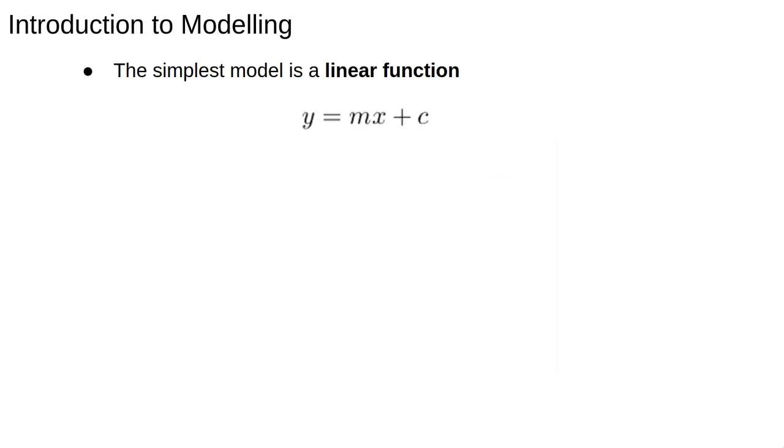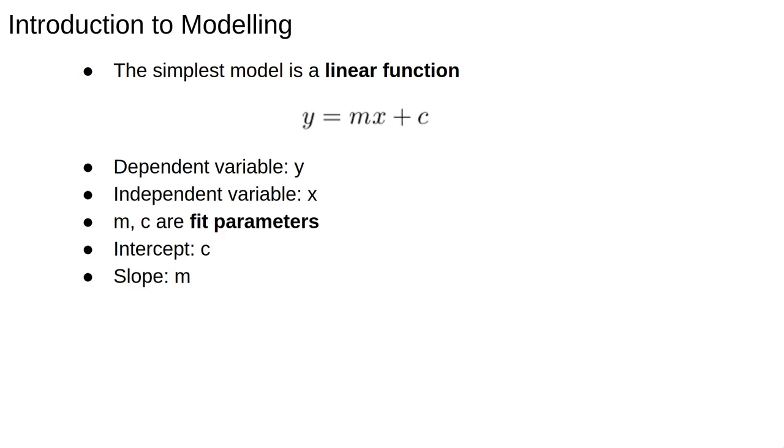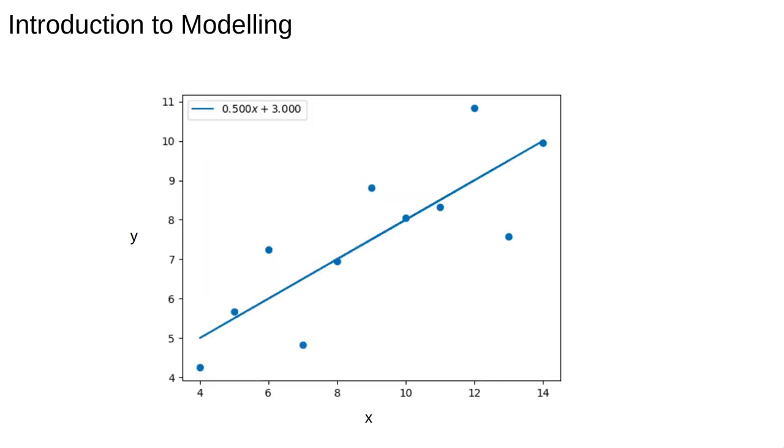So, let's talk about the simplest model, a linear function y = mx + c. Here y is the dependent variable, or the output, and x is the independent variable, or the input. The two constants, m and c, are called fit parameters, or just parameters. For a linear function, c is called the intercept and m is the slope. Here's an example of a linear fit to the data we showed in the first slide. The slope is 0.5 and the intercept is 3.